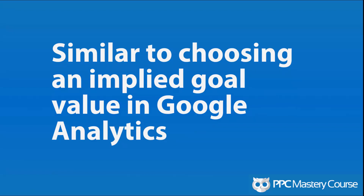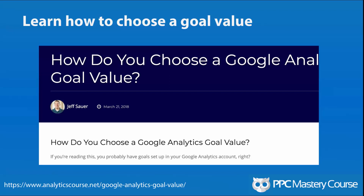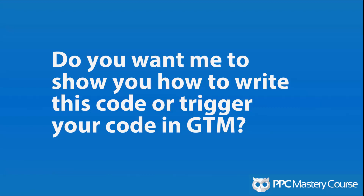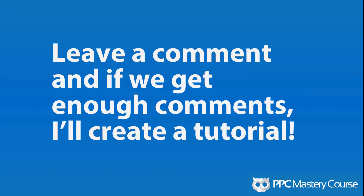The click-based approach is less ideal because you're tracking a fraction of the actual conversion, not the conversion itself. You'll need to adjust the conversion value accordingly — similar to choosing an implied goal value in Google Analytics. You can use that framework to calculate the value of click-throughs from your AdWords ads. This also requires code: you'll need to add code to your site or set up something in Google Tag Manager using CSS selectors so that when a button is clicked, it triggers the event to send data into Google AdWords conversion tracking. Leave a comment if you want me to show you how to write this code in GTM.